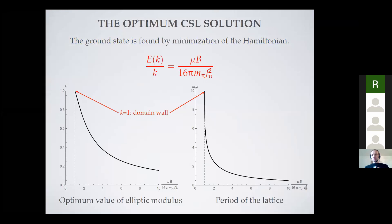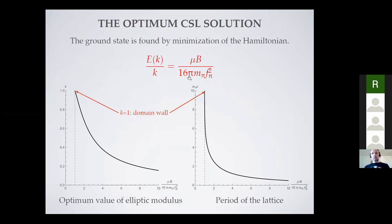To determine the actual ground state, you evaluate the energy and find the optimal elliptic modulus. This can be expressed analytically: the elliptic modulus in the ground state is fixed by an equation involving the product of chemical potential and magnetic field on one side, and E — the complete elliptic integral of the second kind — on the other. When the right-hand side exceeds one, we find a non-trivial modulated ground state. In the limit where it equals one, the elliptic modulus is one and the solution corresponds to a single domain wall.